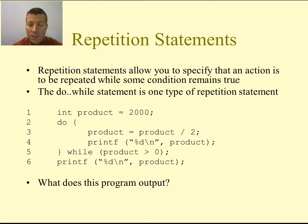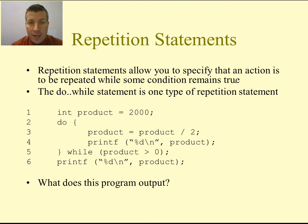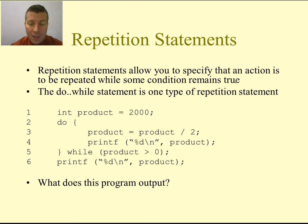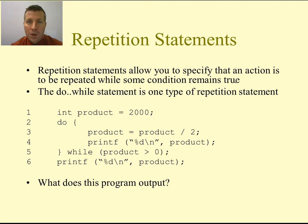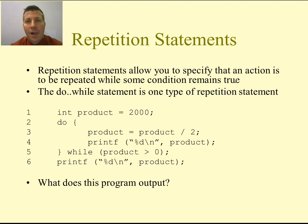Inside the body of the do — which is between the open and closed curly brace — this is what you want to happen as long as the condition is true. The do-while executes the body before it even checks the condition. It's going to execute it one time, so regardless of what the value of product is, it will execute the body at least once. After executing the body the first time, it checks the condition on line 5. If product is greater than 0, it loops back up and executes lines 3 and 4 again. Once the value becomes 0 or less, it breaks out and executes line 6.